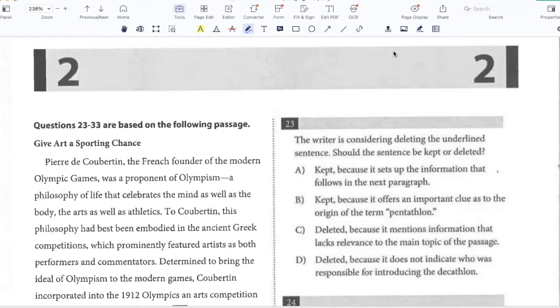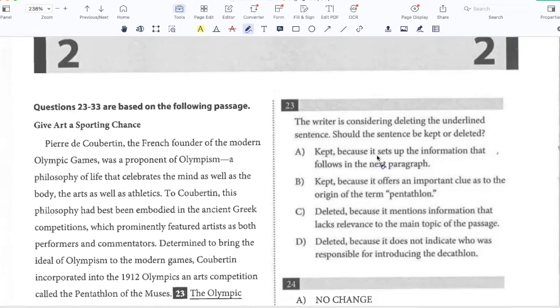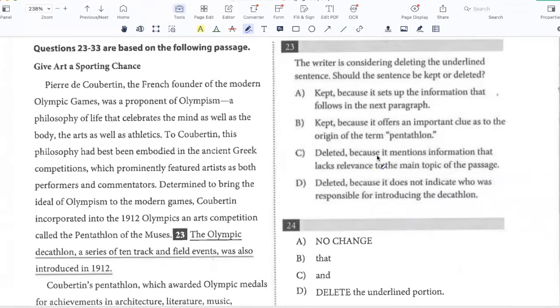Give art a sporting chance. Pierre de Coubertin, the French founder of the modern Olympic Games, was a proponent of Olympism, a philosophy of life that celebrates the mind as well as the body, the arts as well as athletics. To Coubertin, this philosophy had been best embodied in the ancient Greek competitions, which prominently featured artists as both performers and commentators. Determined to bring the ideal of Olympism to the modern Games, Coubertin incorporated into the 1912 Olympics an arts competition called the Pentathlon of the Muses. The Olympic Decathlon, a series of 10 track and field events, was also introduced in 1912.